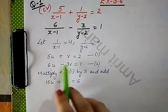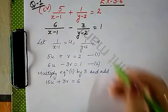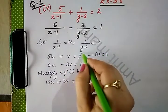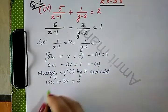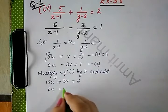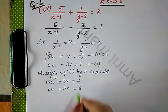Jab bhi hum multiply karna hai, hum equation ki dono side per multiply karna hai. Humne is equation ko 3 se into kiya hai, so ismein dono side se into karenge. Second equation as it is: 6u minus 3v is equals to 1.